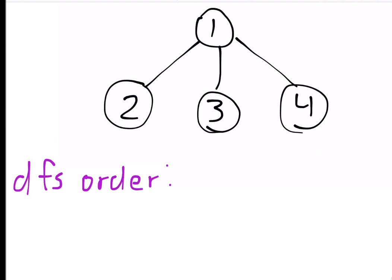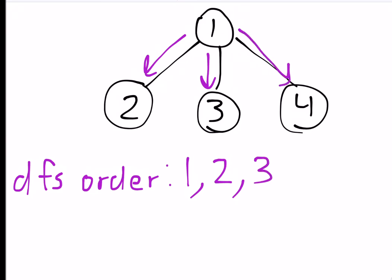The prerequisite for this problem is segment trees with lazy propagation. The first thing we're going to do to solve this problem is create a DFS order. We start at our root, node 1, and basically DFS, adding each node to the DFS order as we traverse it. Since we start at 1, we immediately add it. We then search the first child, node 2 — it has no children, so we return. Then node 3, also no children. Then we add node 4 to our ordering.